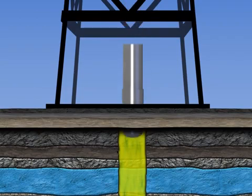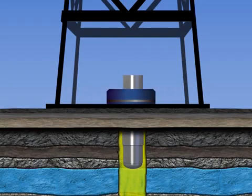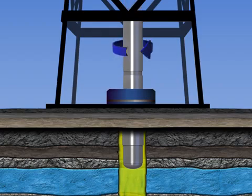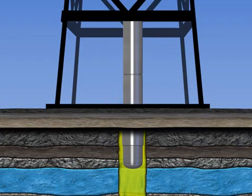The casing string is made of numerous joints of the same size screwed together at the collar. The casing pipe is selected according to its outer diameter, its wall thickness, its length, its weight by unit length, and the grade of steel it is made of.